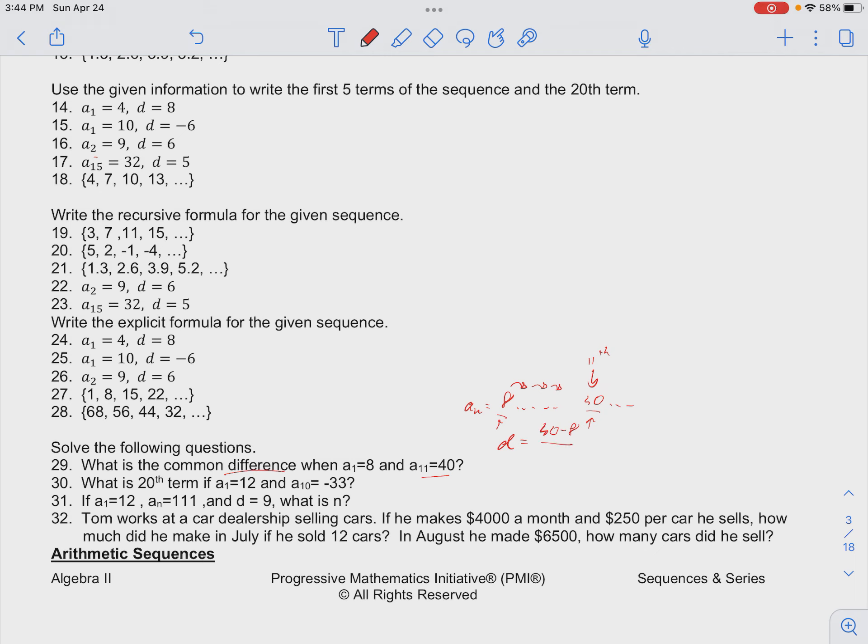So that would be 11 minus 1 which would be 10 places. So we have 32 over 10 which is equal to 3.2 as our d.